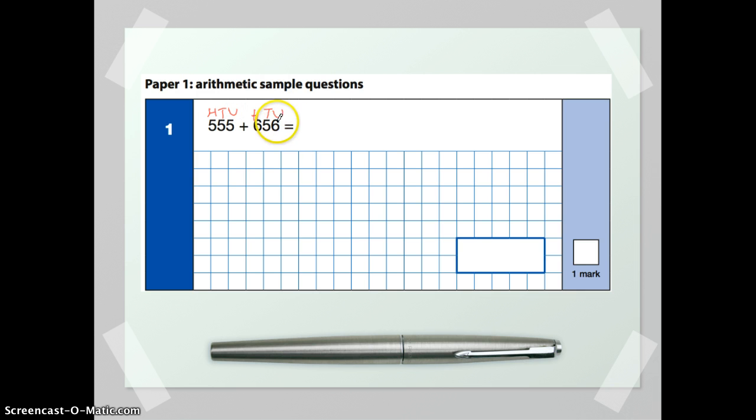So we know straight away we're going to be adding these up. Now there's a couple of ways you could do this. You could either draw yourself a number line and begin on a larger number and then count on in amounts in hundreds, tens and units,